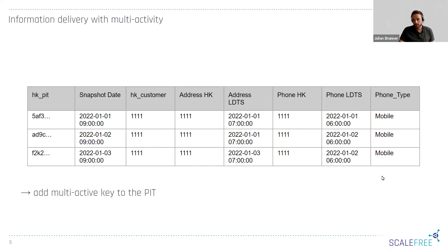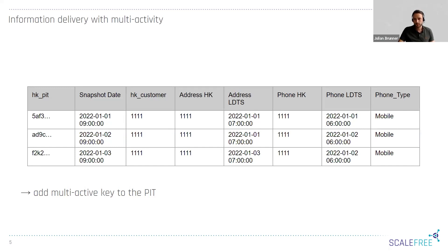It's also possible to pivotize the data, so for each multi-active attribute value you could add a separate reference to the PIT table. There's a trade-off between storage and performance here, because the PIT table can get very large if you extend it for every multi-active satellite key. That's essentially the solution for querying multi-active satellites.